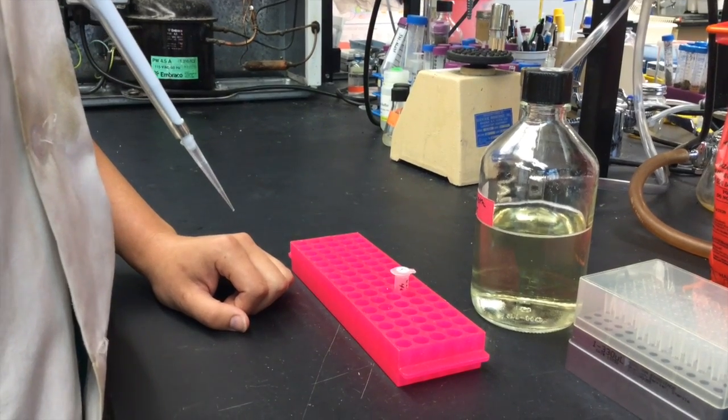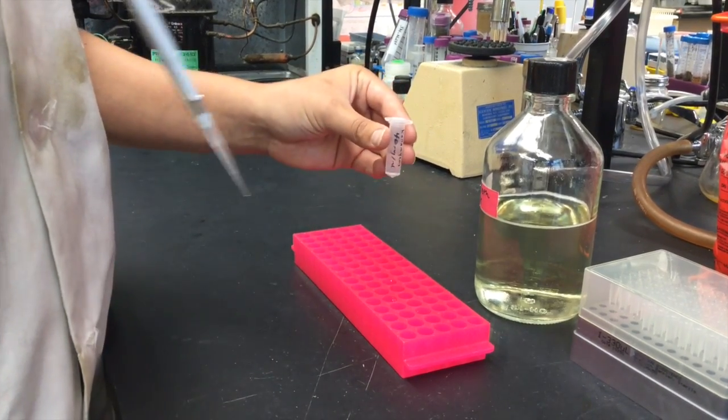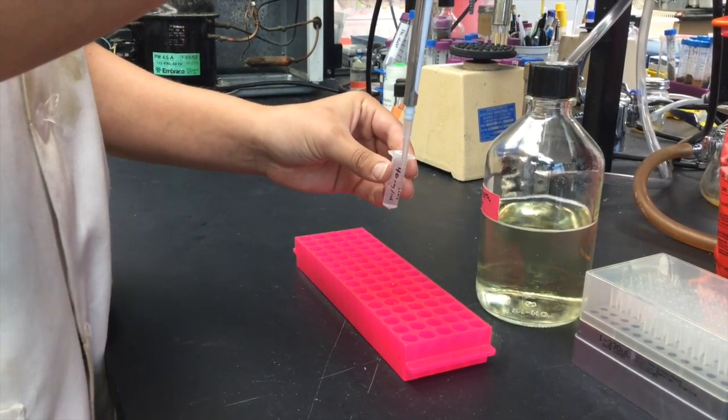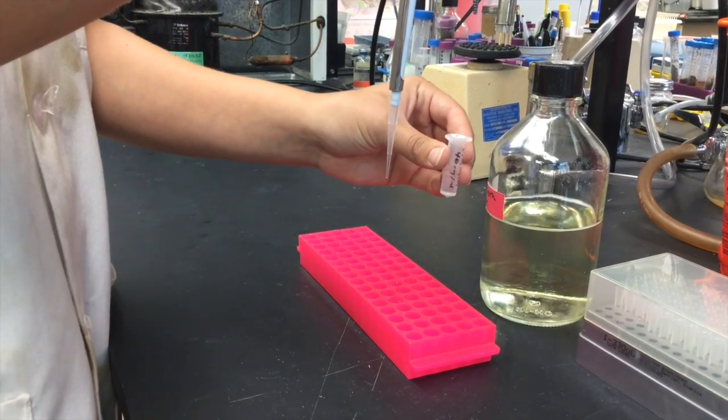Now draw up 150 microliters of the antibiotic solution. Hold the pipetter straight up and down, not at an angle. The antibiotic solution is sterile, so be careful to use good aseptic technique.